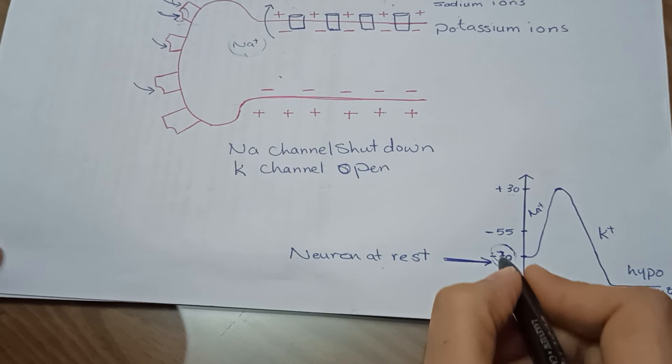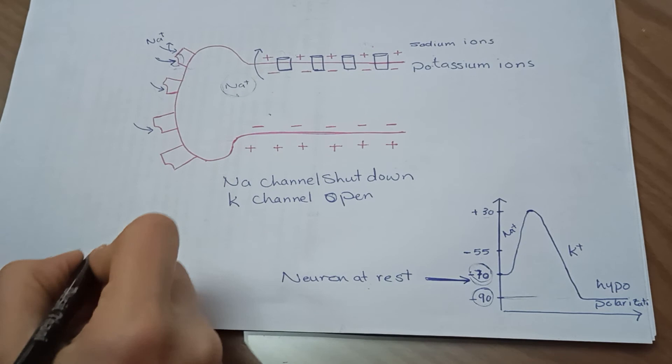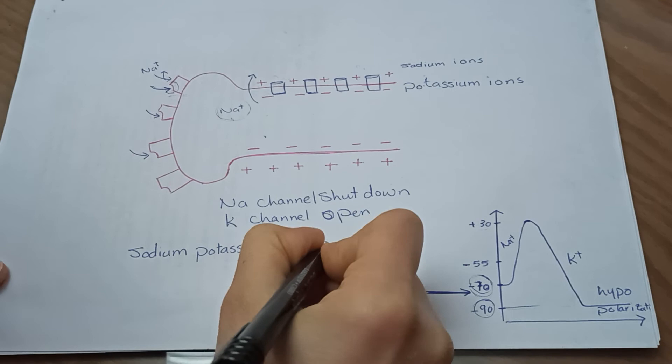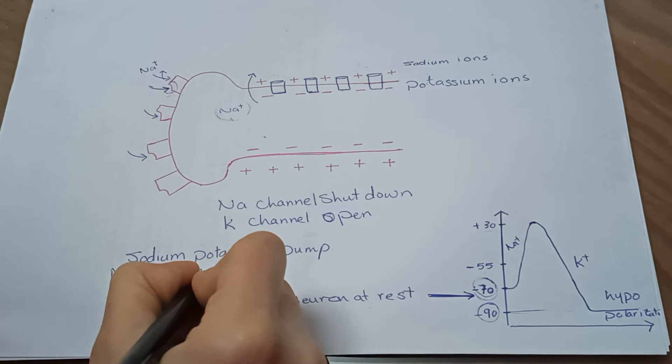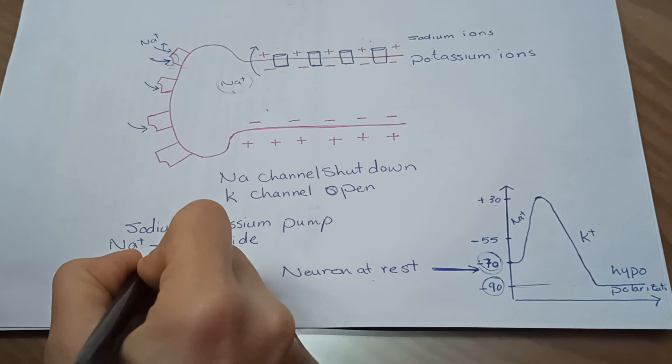So it is back now to rest using the sodium-potassium pump, which allows sodium ions to be pumped outside the cell again and allows potassium ions to be pumped inside the cell, and returns the neuron to its resting phase.